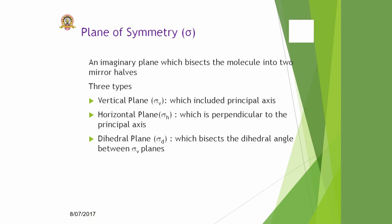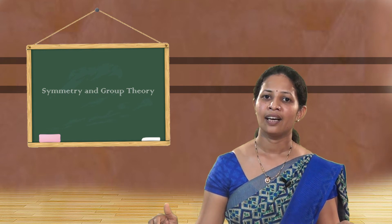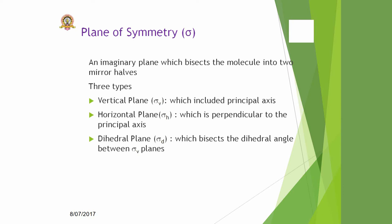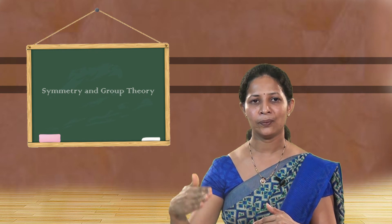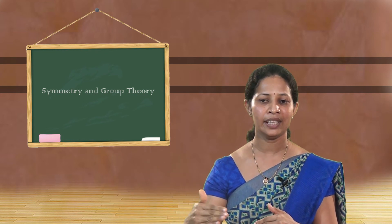The next symmetry element is the plane of symmetry, with notation sigma. We can define it as an imaginary plane which bisects the molecule into two mirror halves. There are three types of planes: the vertical plane, the horizontal plane, and the dihedral plane. The vertical plane is the plane that includes the principal axis. The horizontal plane is perpendicular to the principal axis. The dihedral plane is a plane which bisects the dihedral angle between the sigma_v planes.